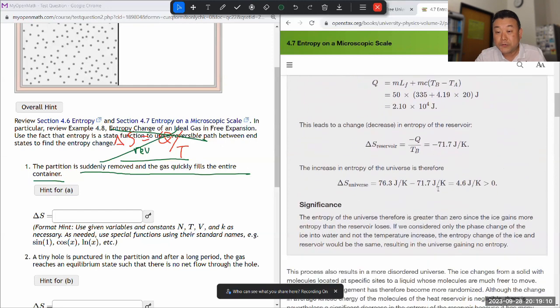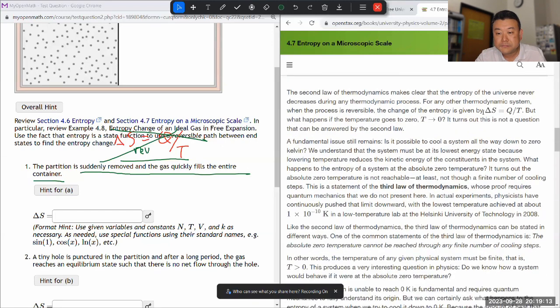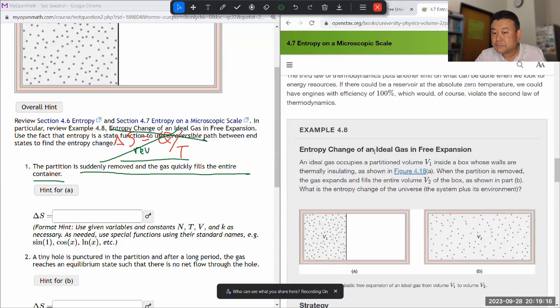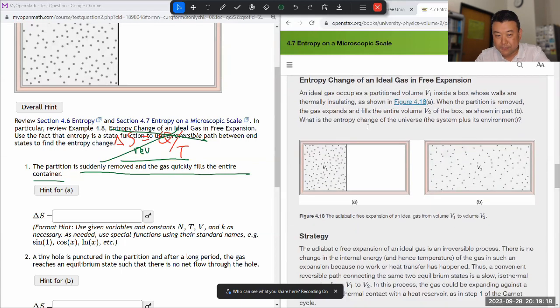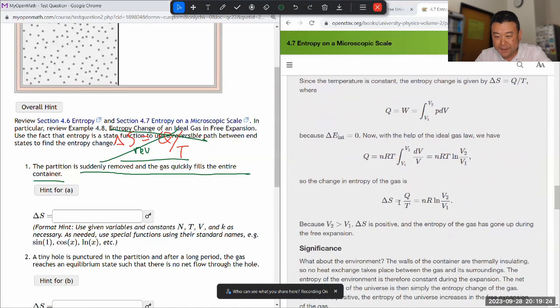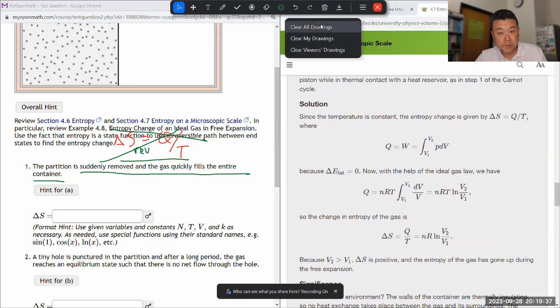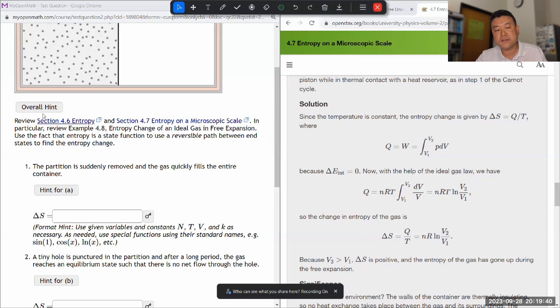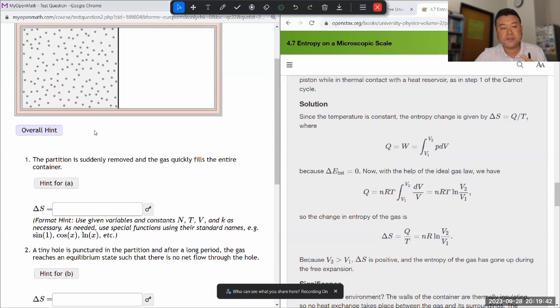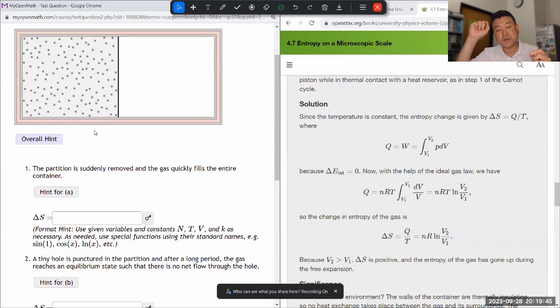I think they will, yeah, yeah, yeah. Example four, I should have read the hint more. Here they do it. They actually do derive it. So here, what they've done is, they made use of the fact that entropy is a state function. So, you don't have to have the exact path that the process takes. As long as your end points are the same, your entropy change will be the same.